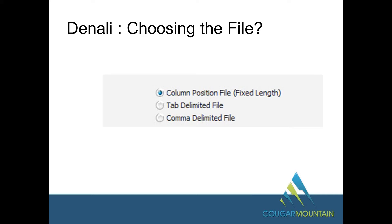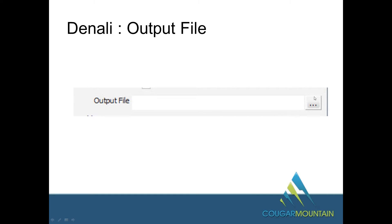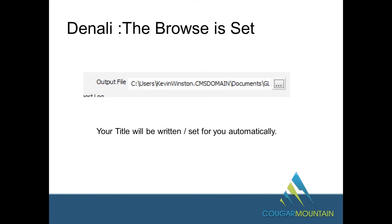In our example today we're going to be using tab delimited. The output file is basically these three dots right here — I usually tell people to click on that because it gives you a choice of where you want to put the export. My suggestion is to take it out to your documents. One helpful tip: on the output file, put a date next to the name so that way you can use the same title but with different dates. Every time you use it, it will have today's date.